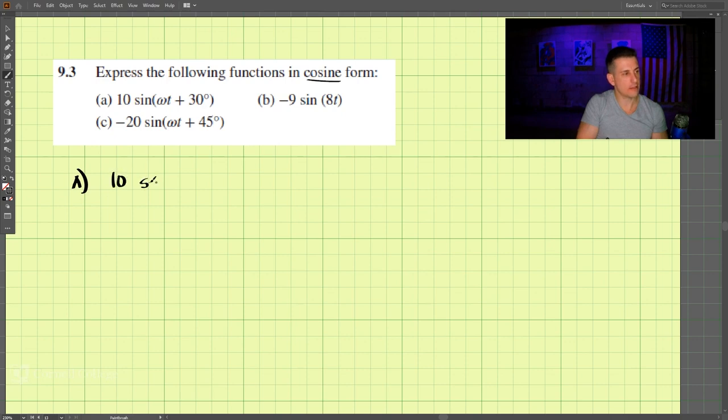Part a is 10 sine of omega t plus 30 degrees, and we want to transform that into a cosine. If you remember, sine of some value is equal to cosine of that value minus 90 degrees.